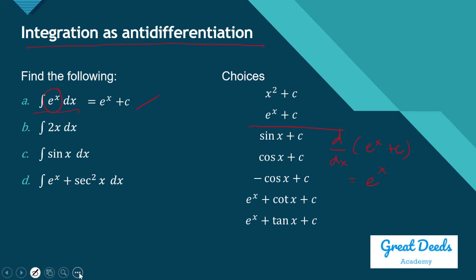What is the integral of 2 times x dx? What function, when you take its derivative, gives you 2x? Obviously it's x squared plus C, because the derivative of x squared plus C — using the power rule, bring down 2, giving 2 times x — plus the derivative of a constant which is 0, gives 2x.